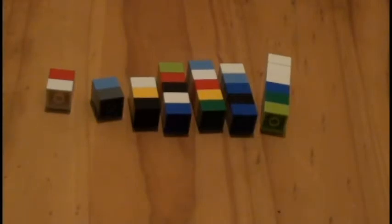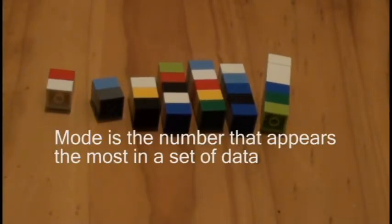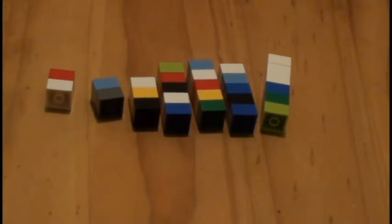The last type of average we're going to talk about today is mode. Mode is the number that appears the most in a set of data. A good example of when mode is used is when a company needs to find out which size jersey is bought the most. They're going to use mode to see in that case.